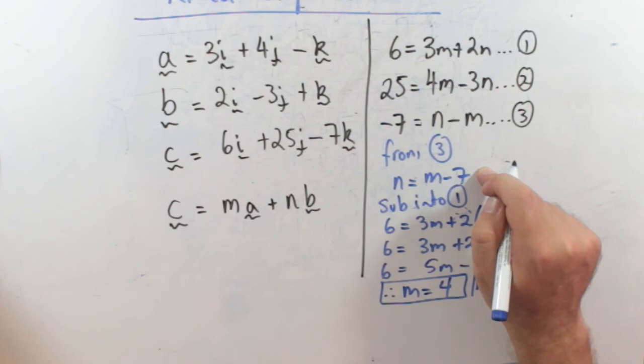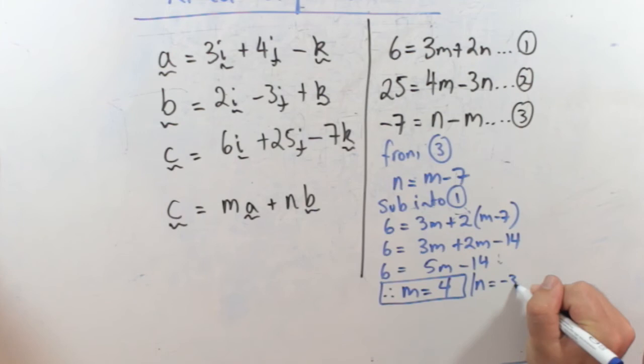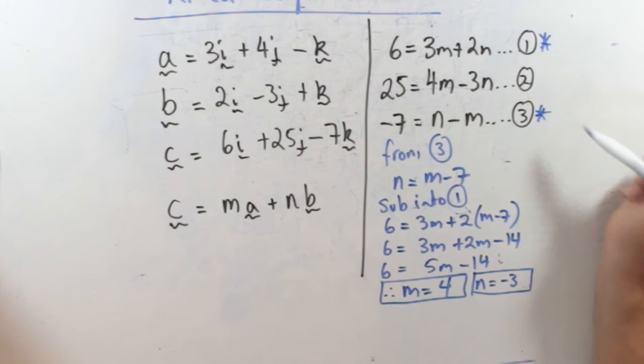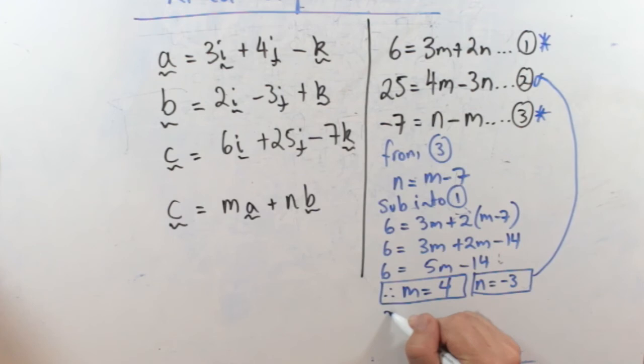Now, I've only used equation 1 and equation 3 to work that out. Does it work for equation 2? Let's try. 25, does that equal 4 times m, which is 4, minus 3 times minus 3 for n. So I get 16 plus 9 equals 25. Good, as required. All right, that's it for this video.